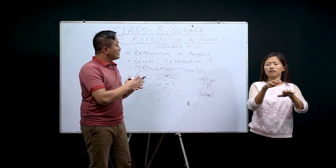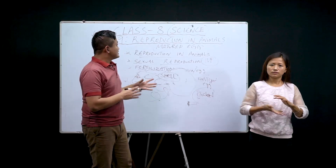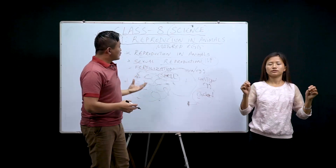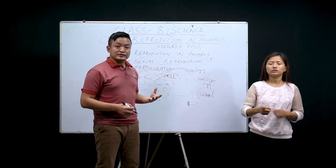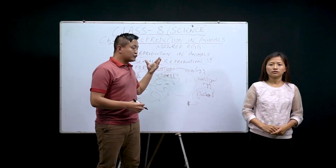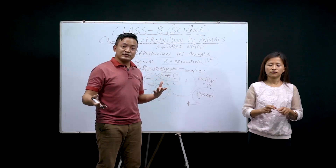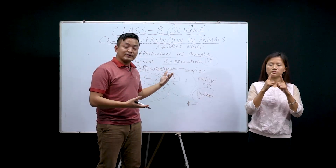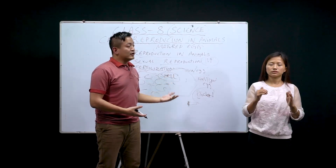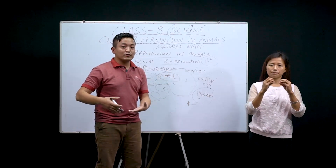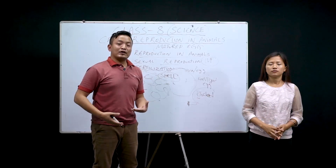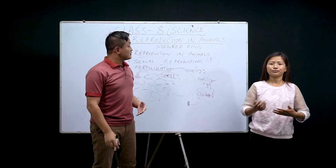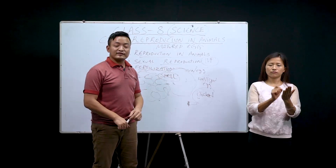Under animals, the mode of reproduction can be very different. Today we have discussed up to zygote formation. Tomorrow we will talk about the different stages — from embryo to human baby — till the end. Thank you so much, students. Make note of everything. See you in the next class.